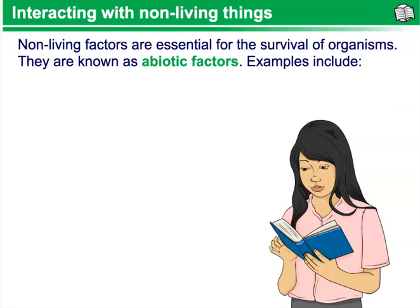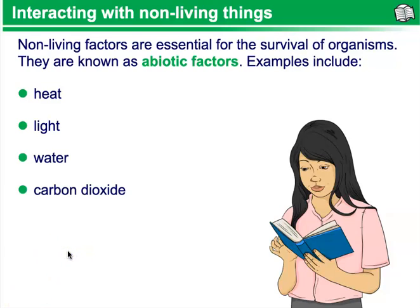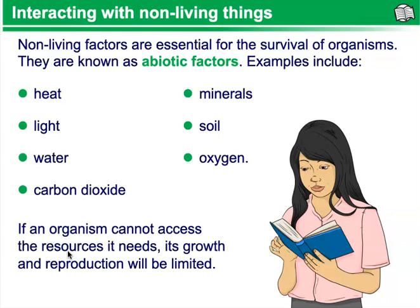Interacting with non-living things. Non-living factors are essential for the survival of organisms. They are known as abiotic factors. Examples include heat, light and water, carbon dioxide, minerals, soil, and oxygen. If an organism cannot access the resources it needs, its growth and reproduction will be limited.